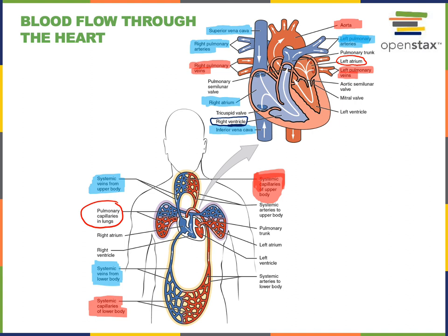For this reason, the blood pressure of the systemic arteries is much higher than the blood pressure of the pulmonary arteries. This blood pressure is the force that drives blood flow, and a higher blood pressure is required to force blood to flow a longer distance through a longer system of blood vessels.